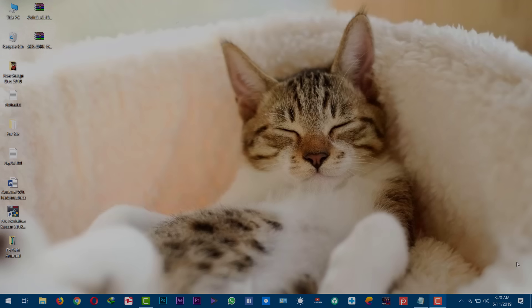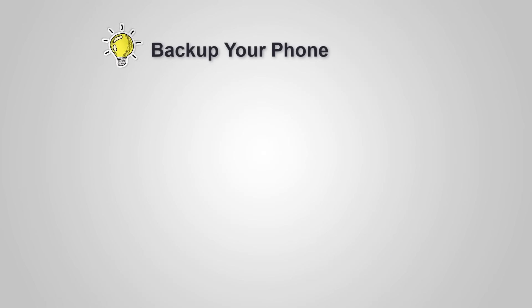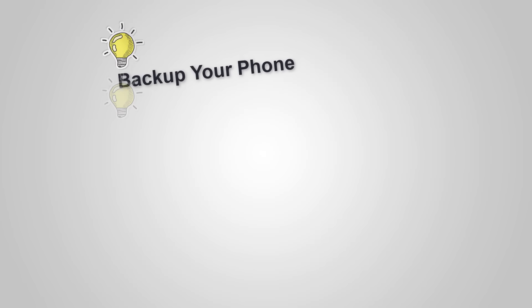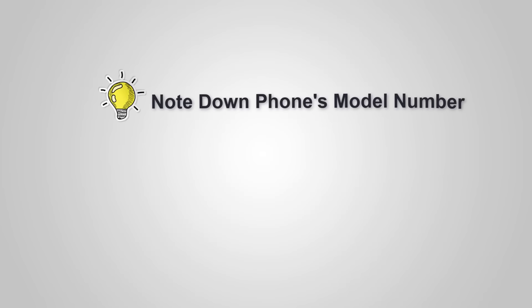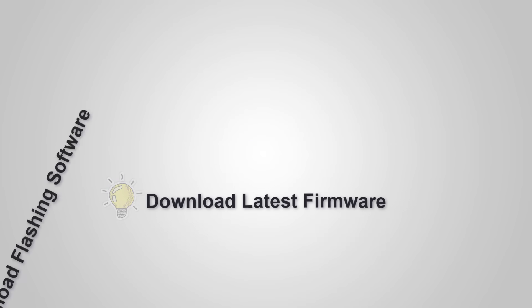Before you start flashing your phone, you need to do four things. First, backup your phone to your computer — just in case something goes wrong during the flashing process, your files will be safe. Second, write down your phone's model number along with baseband version. Third, download flashing software. And the last thing is, download firmware for your Android device.